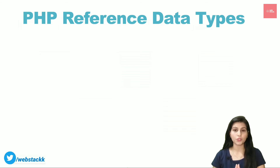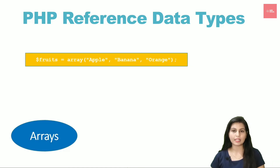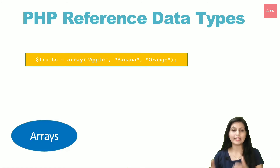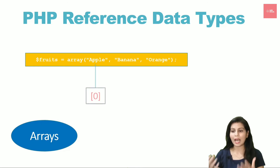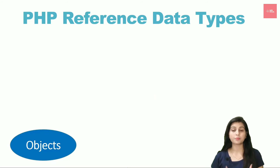Reference data types are those where the reference — or address — of a value is stored rather than the direct value. The first reference type in PHP is arrays, which are collections of multiple values of the same data type. For example, a fruits variable defined with a dollar symbol uses the array() method containing fruit names. Values inside an array are given indexes that always start at zero — so apple is at index 0, banana at index 1, and orange at index 2.